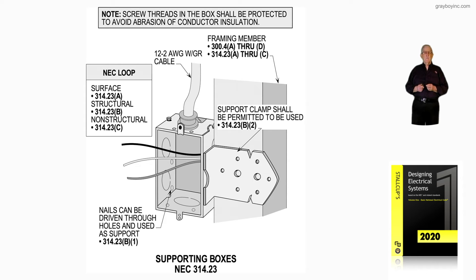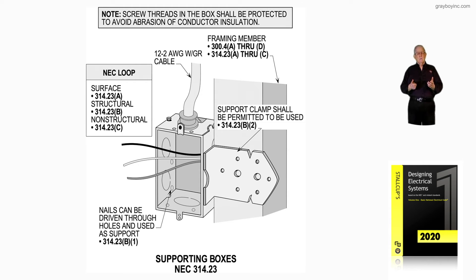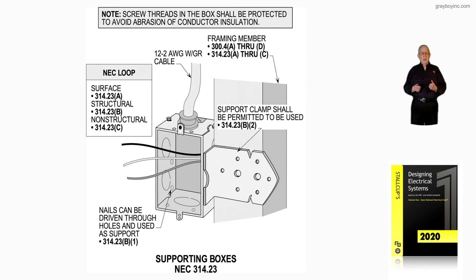Notice we have 12-2 with ground cable coming into that box, and all we're showing here is mainly the support means of the box. If we want to learn about the surface of the box, it would sit back and you could put a half-inch sheet rock, the finishing material of the wall, over it. 314.23(A) covers the structural portion, and 314.23(B) covers the structure portion, while non-structural means would be 314.23(C).